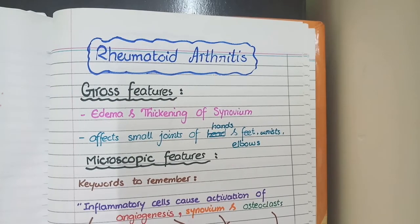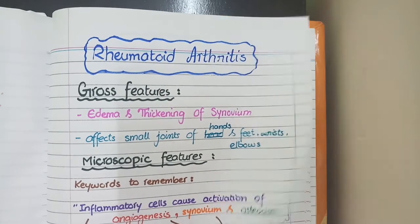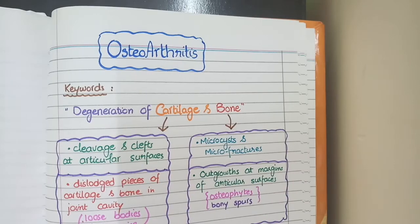In this video, we will study the pathological features of rheumatoid arthritis and osteoarthritis.